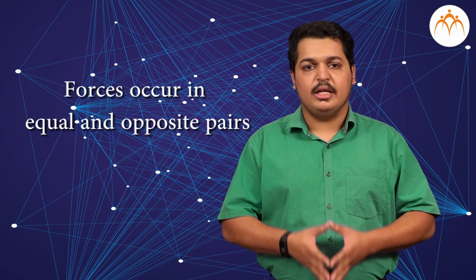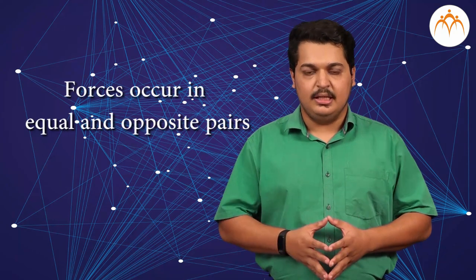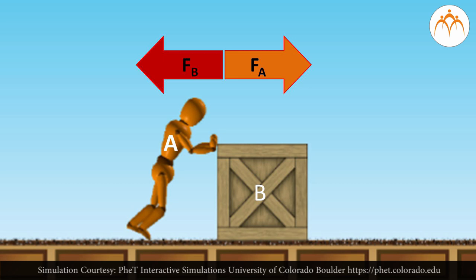Newton after observing a series of results such as these decided that there must be a fundamental law of nature at work. Forces occur in equal and opposite pairs. Whenever object A exerts a force on object B, object B must also be exerting a force on object A. The two forces are equal in magnitude and opposite in direction. This is Newton's third law.